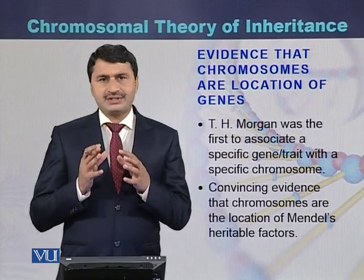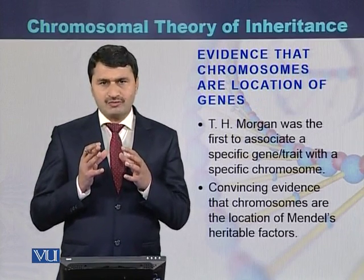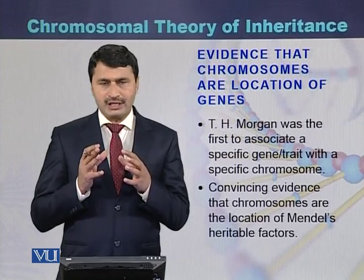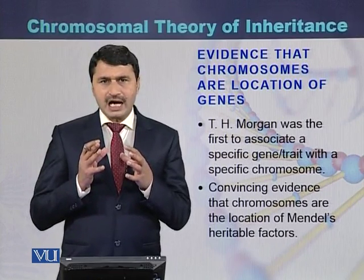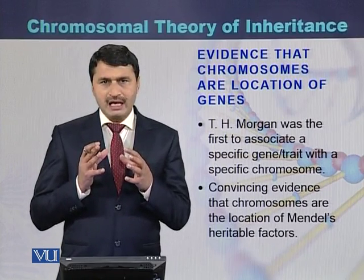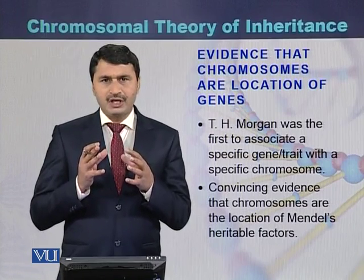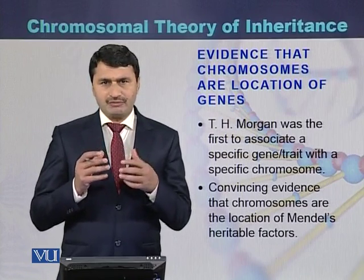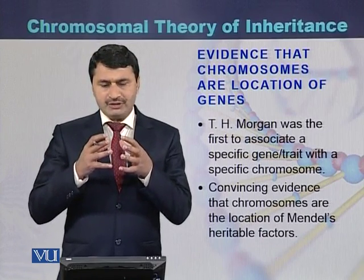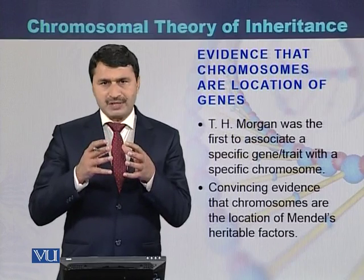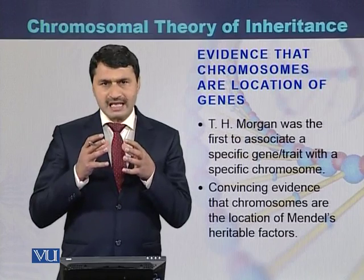The first evidence that genes are located on chromosomes was provided by T.H. Morgan. He proved through experiments that the red eye color of Drosophila is linked to the sex of the Drosophila, and that the gene for red eye color is present on a chromosome now called the X chromosome.